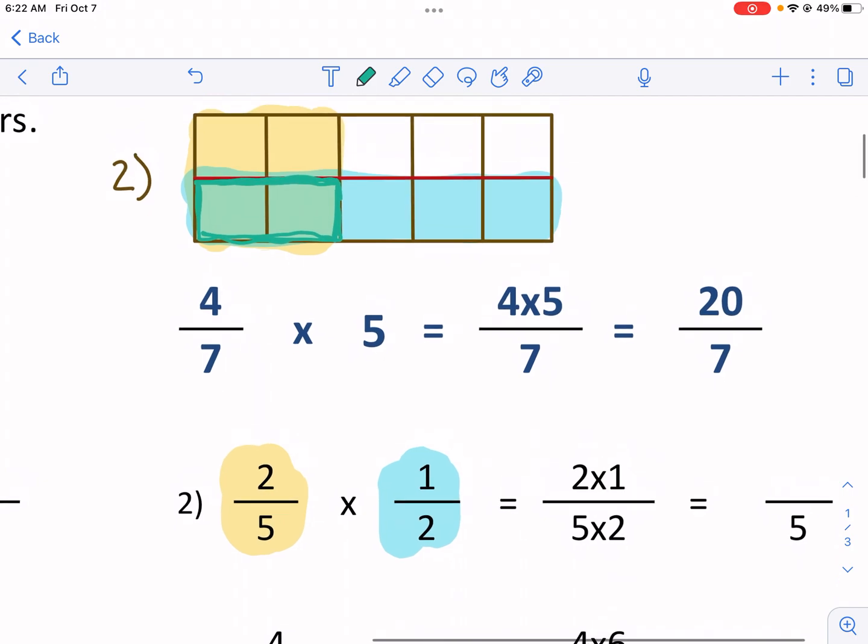So first, you'll notice when we divide it in half, we divide it into smaller pieces. So it wasn't just in fifths. Now we have 1, 2, 3, 4, 5, 6, 7, 8, 9, 10 pieces.